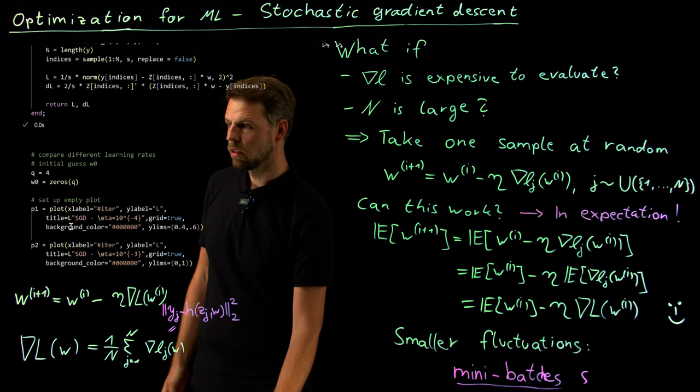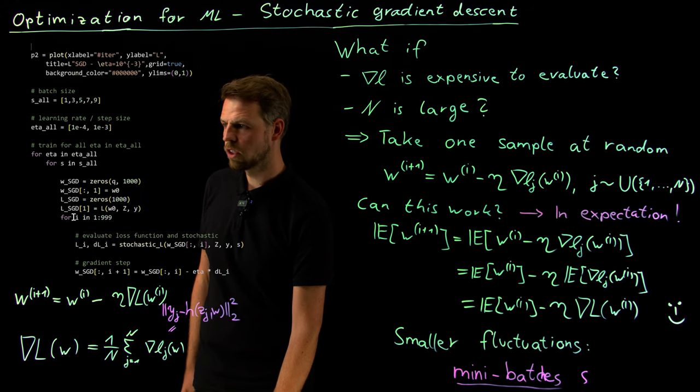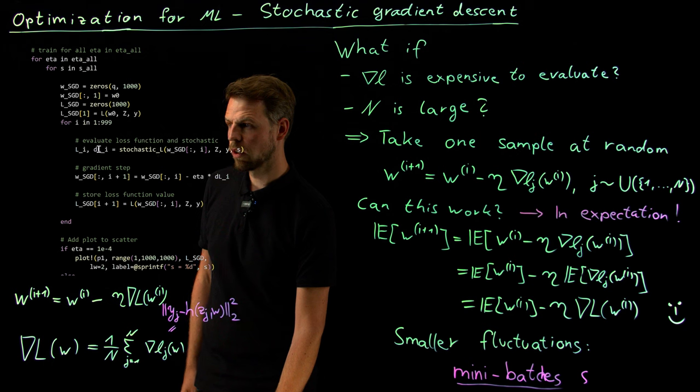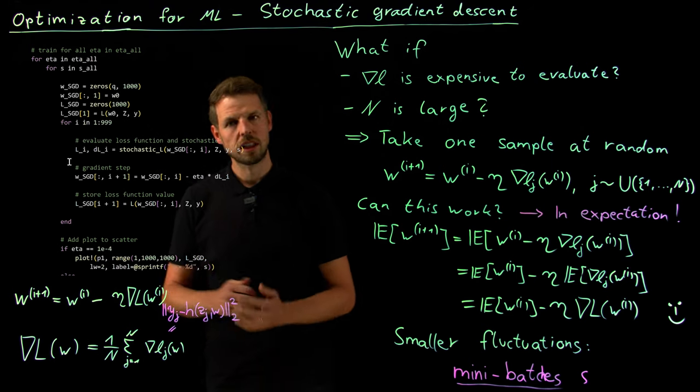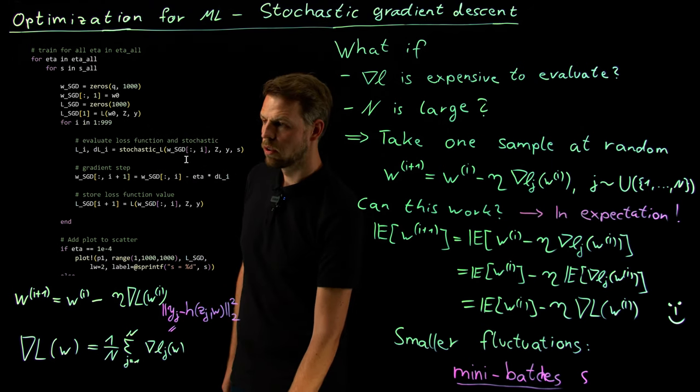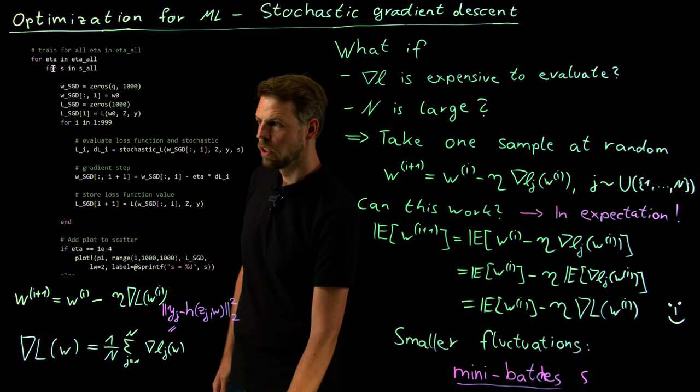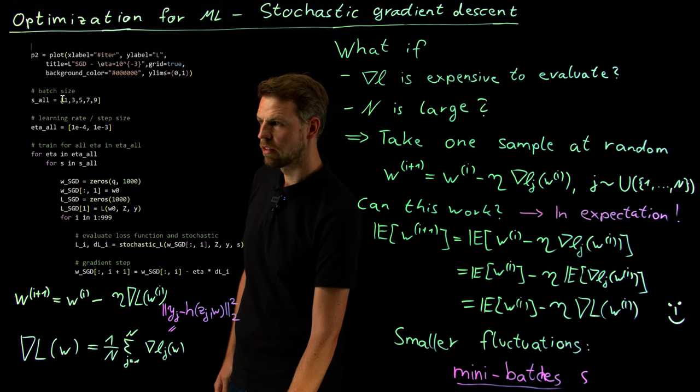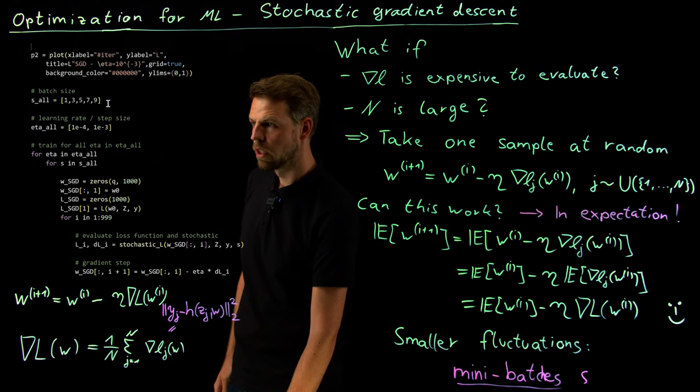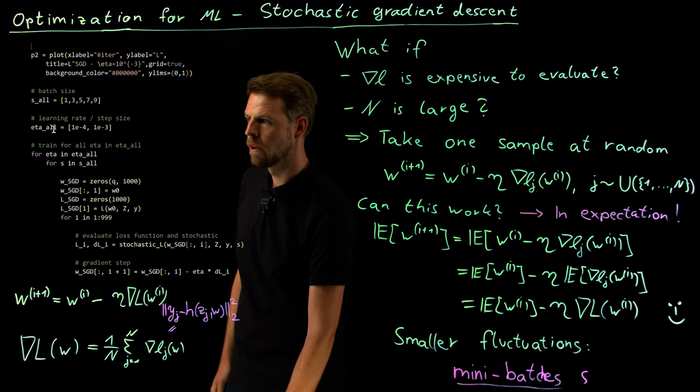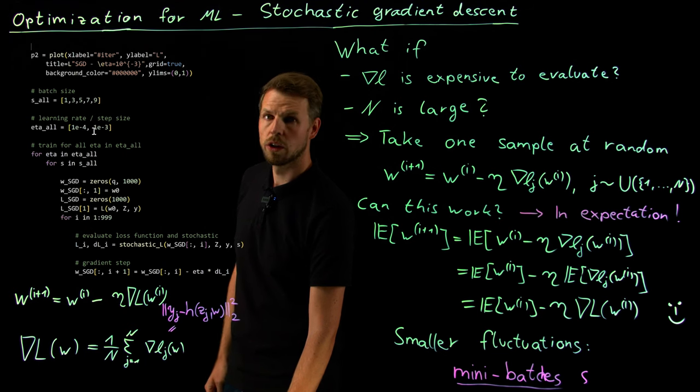So the code does not really matter all that much. The only thing that really does matter is that in our loop now what we are going to do is we calculate the stochastic loss function gradient and then we do the gradient descent update exactly as we did it before only that we now are not considering the full gradient but the stochastic gradient. And what I'm doing here is I'm running a loop over different values of s. See here s is between 1 and 9, so the full sample set or close to the full because I have 10 samples overall. This is a small example and then I'm trying to compare this for different learning rates or step lengths.